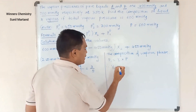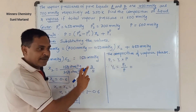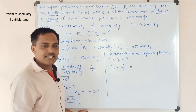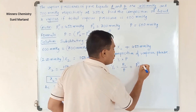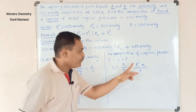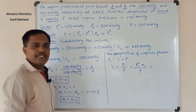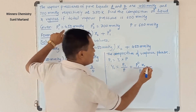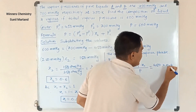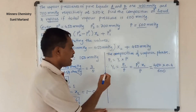To find y1, we write: y1 equals P1 divided by P. Since P1 equals P°1 into x1, this becomes y1 equals P°1 times x1 divided by P. Substituting: P°1 is 450 mmHg, x1 is 0.4, and total pressure P is 600 mmHg.